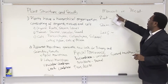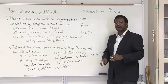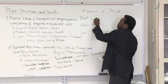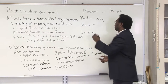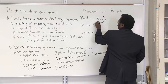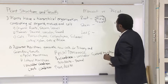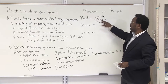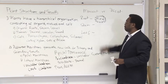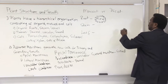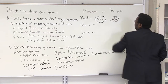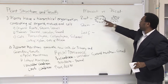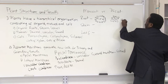As we look at the monocot root, you're going to see that the arrangement of the vascular tissue forms a ring arrangement — a very circular pattern of the xylem vessels in this ring formation. When you look at the dicot root, you have a star-like appearance of the xylem vessels. So we call this a ring arrangement for the monocot and a star or cross arrangement for the dicot.